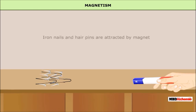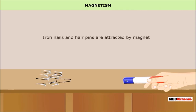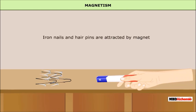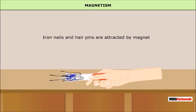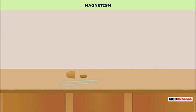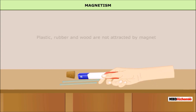Magnetism. If you ever played with a magnet, you would have observed that some substances such as iron nails, hair pins, etc. are attracted by the magnet. These are called magnetic substances, while some substances such as plastic, rubber, wood, etc. are not attracted by the magnet. So, they are called non-magnetic substances.